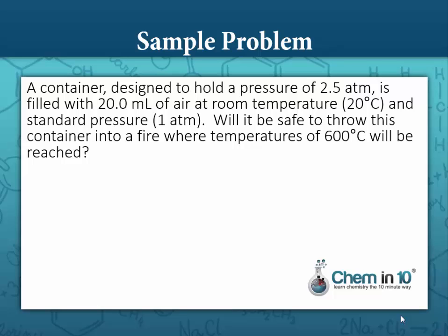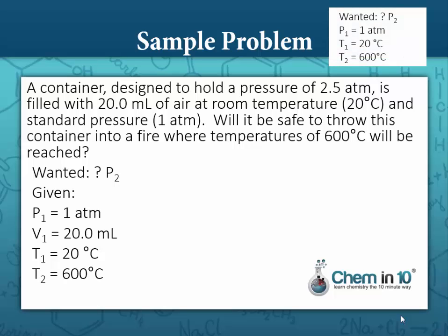It doesn't really tell us what it's asking for. It's asking us will it be safe, so we have to figure out what that means. We have a container designed to hold a pressure of 2.5 atmospheres. We have it filled up with air at 1 atmosphere, so we want to know, is the final pressure going to be less than or greater than 2.5 atmospheres? So really, we're looking for final pressure. We're given an initial pressure of 1 atmosphere, and we're given a volume of 20 milliliters and a temperature of 20 degrees Celsius and a final temperature of 600 degrees Celsius.